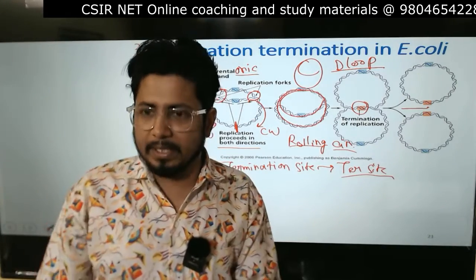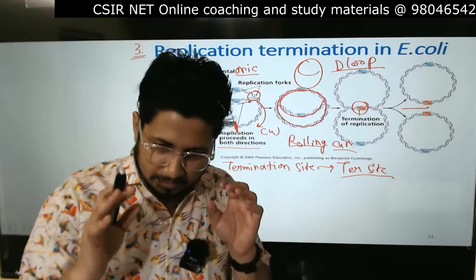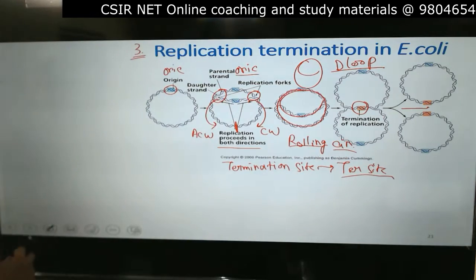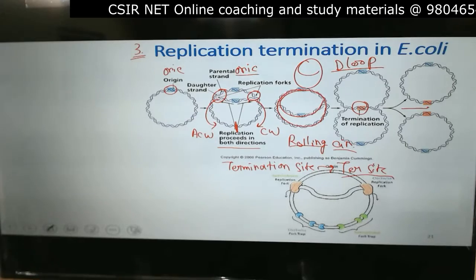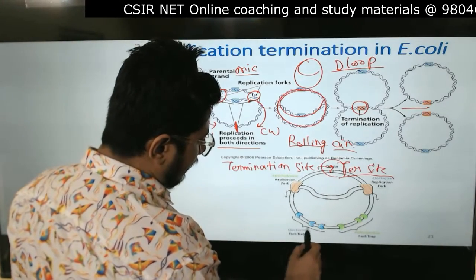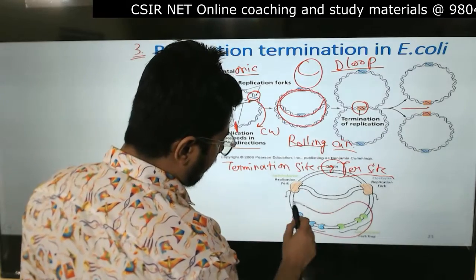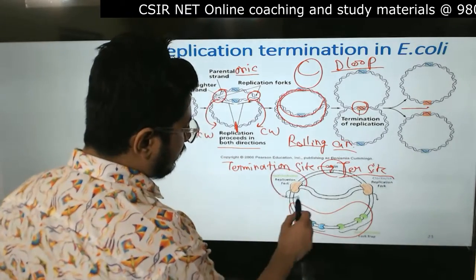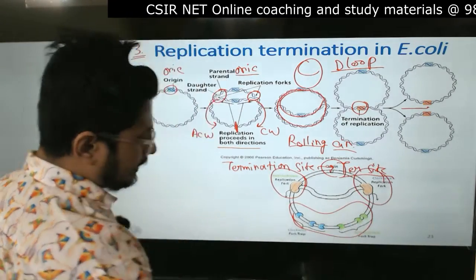These are the three types of replication generally focused on: theta mode of replication, rolling circle replication, and D-loop replication. But predominantly the replication that goes on is theta replication. Why theta? Because theta shape is formed.